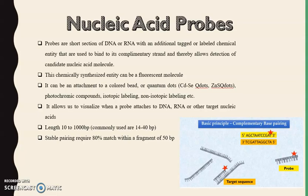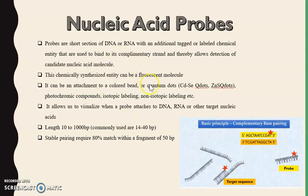Today we are going to talk about nucleic acid probes. Nucleic acid probes are either a single-stranded DNA or an RNA with a strong affinity towards a specific DNA or RNA target sequence. This affinity and complementary sequence allows binding to specific regions of target nucleotides. They can be labeled with fluorescent molecules, photochromatic compounds, or isotopic labeling to detect these probes. Their length may vary from 10 to 1000 base pairs, commonly 14 to 40 base pairs.